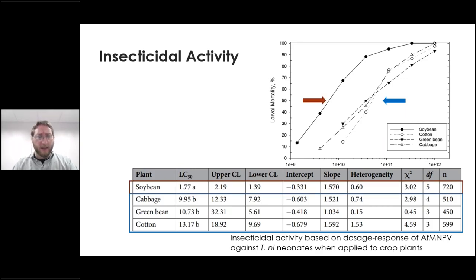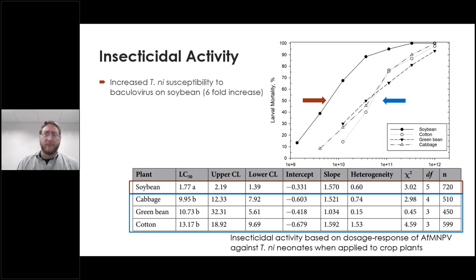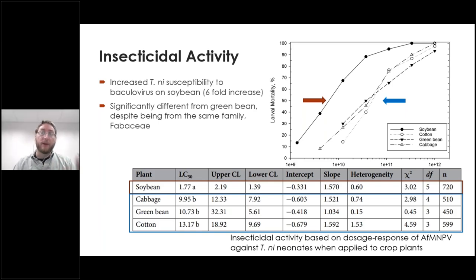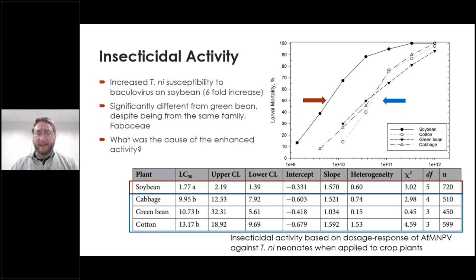However, on soybean, we had a very interesting result: a six-fold increase in susceptibility of the cabbage loopers when exposed to soybean. We repeated this over and over again and continually found the same result. This was particularly interesting because the green bean is very closely related to soybean, in the same family Fabaceae, yet the insects had dramatically different susceptibility on soybean compared to all the other crops tested. We wanted to determine why we had this enhanced activity.